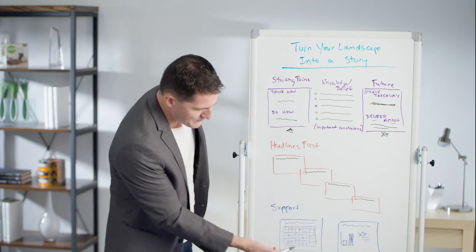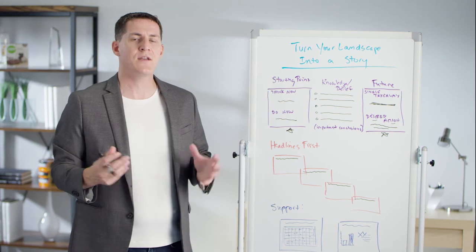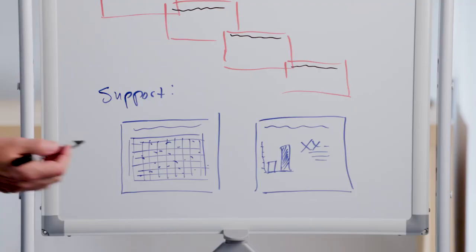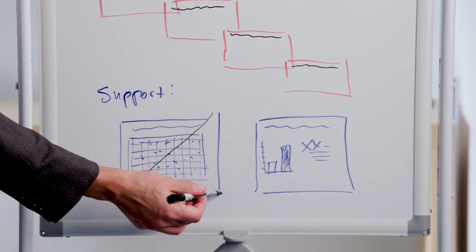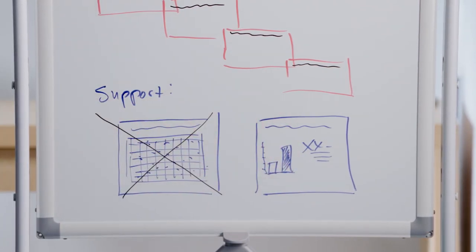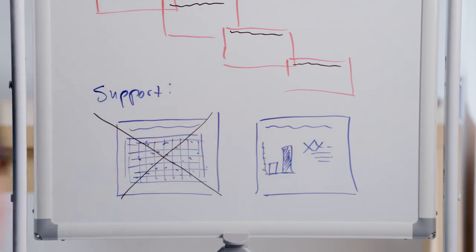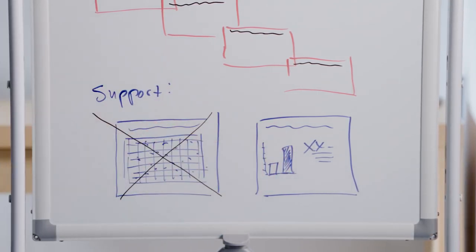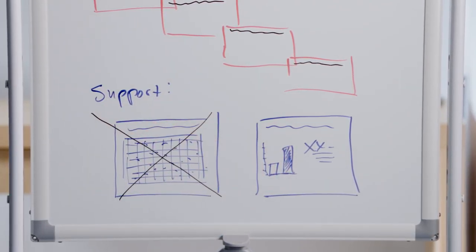So I have an example here of a chart-heavy, data-heavy slide that has tons of information on it. This is going to be far less effective for you than an approach that really simplifies, pulls a key stat, for example, off of that page and makes it more prominent. So now you've only got one or two of the most important points you need to support your headlines.